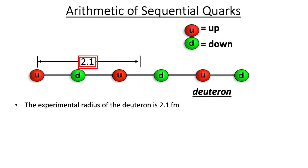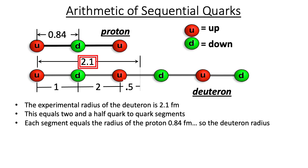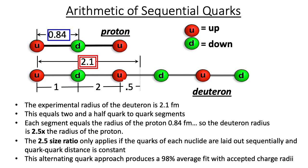The experimental radius of the deuteron is 2.1 femtometers, which equals 2.5 quark-to-quark segments. Each segment equals the radius of the proton, 0.84 femtometers, so the deuteron radius is 2.5 times the radius of the proton. This 2.5 size ratio only applies if the quarks of each nuclide are laid out sequentially and quark-to-quark distance is constant. This alternating quark approach produces a 98% average fit for the lightest elements, hydrogen through magnesium.